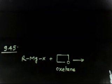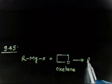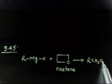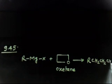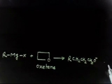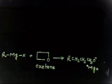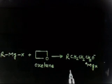If you do hydrolysis, then you will have OH. Otherwise you'll have a salt: RCH2CH2CH2O minus MgX plus. This is basically a salt of alcohol.